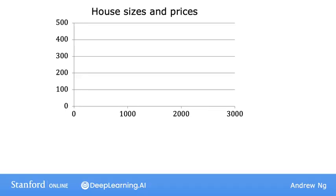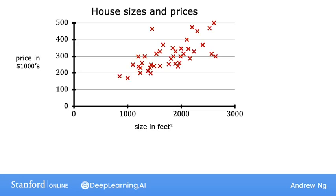Let's start with a problem that you can address using linear regression. Say you want to predict the price of a house based on the size of a house. We're going to use a dataset on house sizes and prices from Portland. Here we have a graph where the horizontal axis is the size of the house in square feet, and the vertical axis is the price of the house in thousands of dollars.